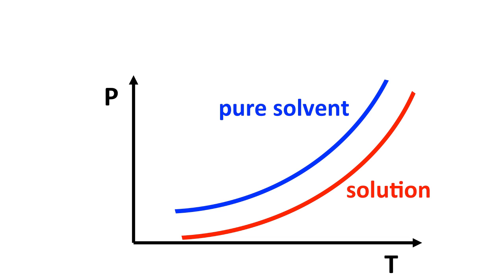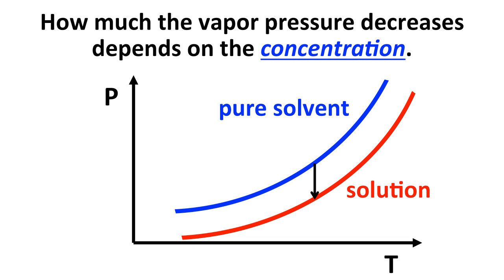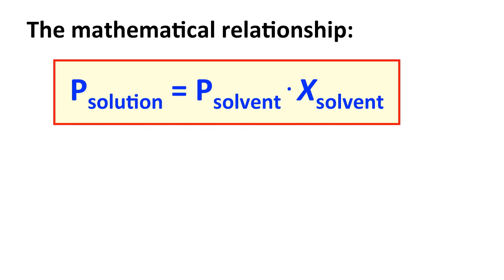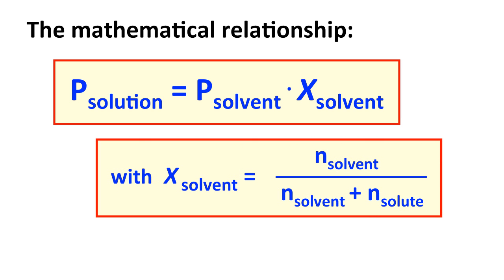The vapor pressure will decrease more if we have a higher concentration of solute particles, and decrease less if we have a lower concentration of solute particles. In general, the amount of vapor pressure lowering is proportional to or depends upon the concentration. The mathematical relationship for vapor pressure lowering is: the vapor pressure of a solution equals the vapor pressure of the pure solvent times the mole fraction of the solvent. The mole fraction of the solvent is the moles of solvent divided by the total moles — moles of solvent plus moles of solute.